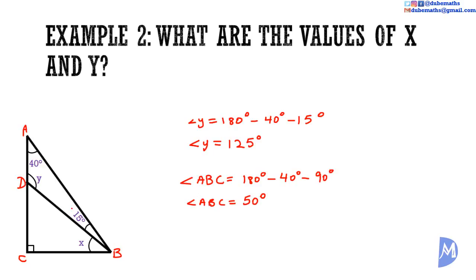Angle ABC is the full angle at B. Given that angle ABC is equal to 50 degrees, and we know that one part of it is 15 degrees, then the other part — angle X — must be equal to 50 degrees minus 15 degrees. Angle X is equal to 35 degrees.